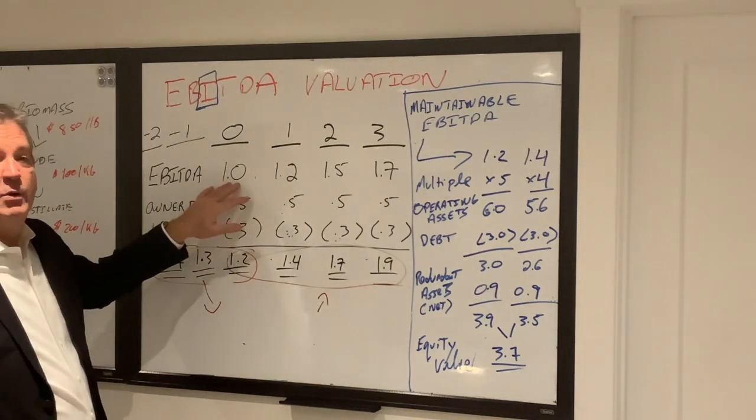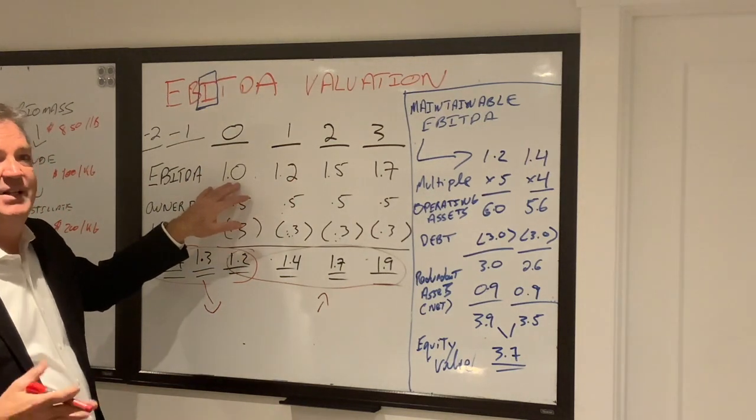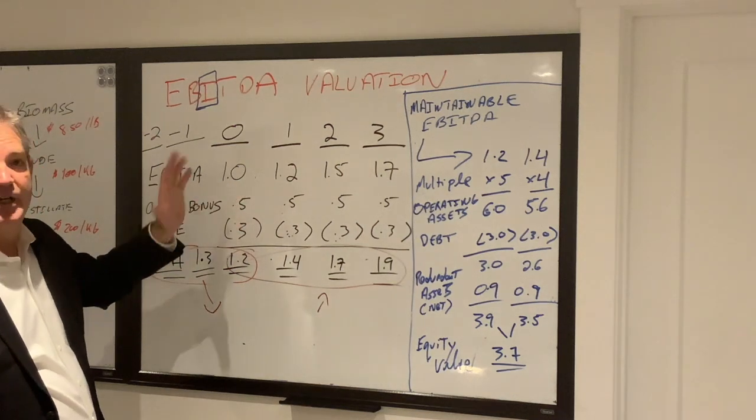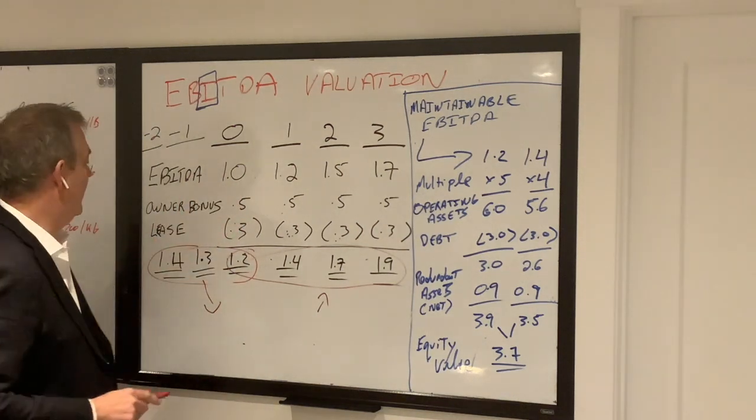By the way, take away zeros, call this 100,000. Add zeros, call it 100 million. It doesn't change the math on this. That's why I've done it simply like that.